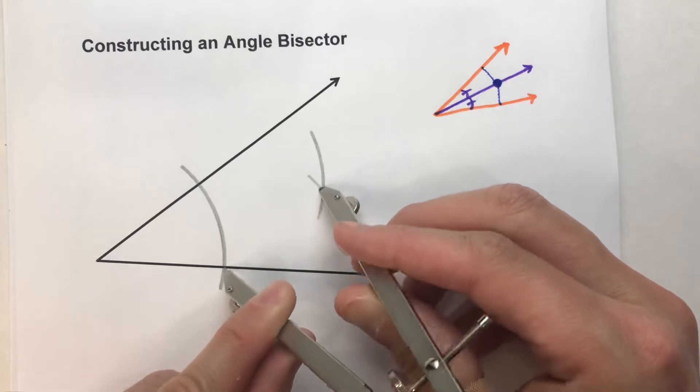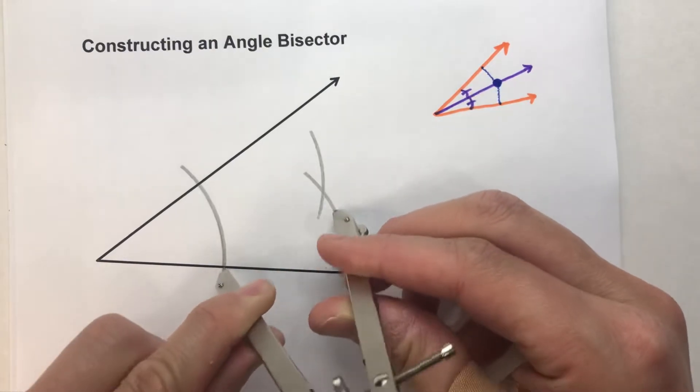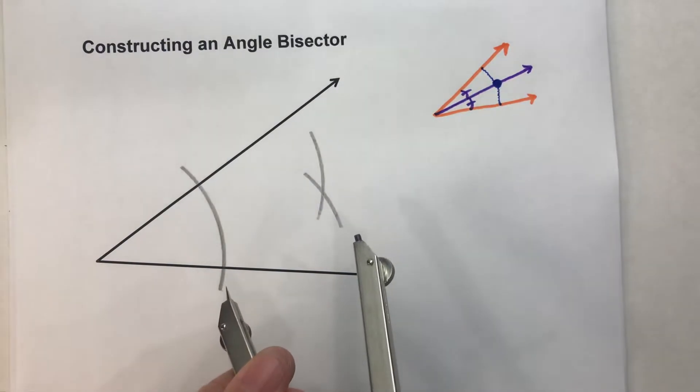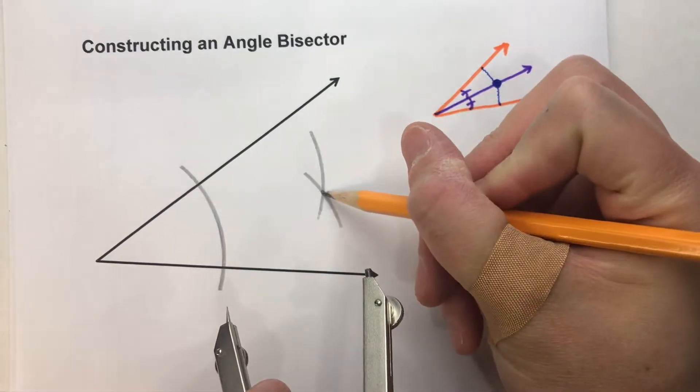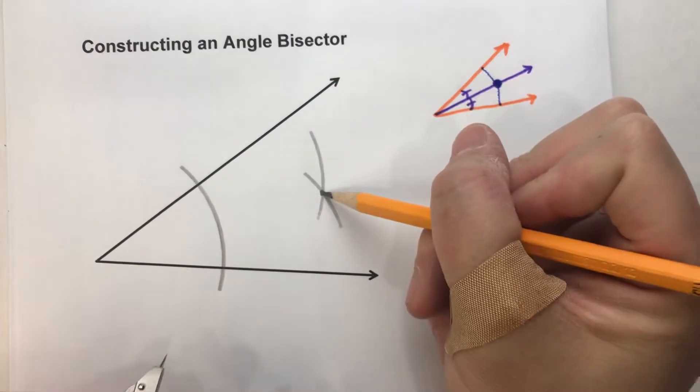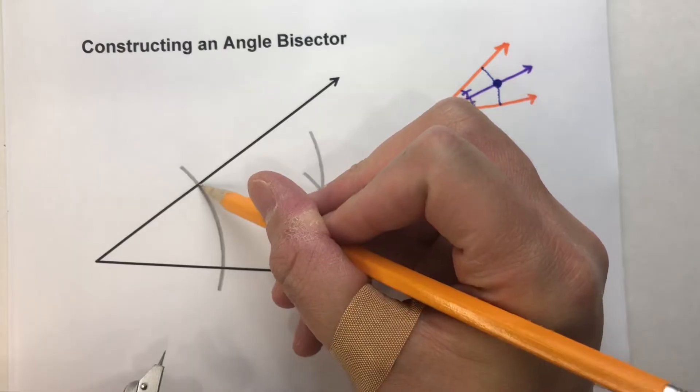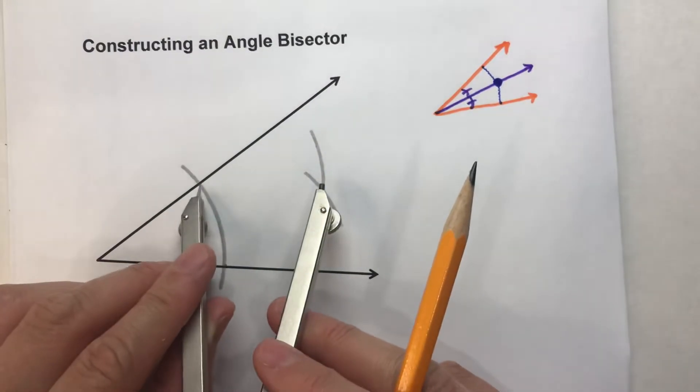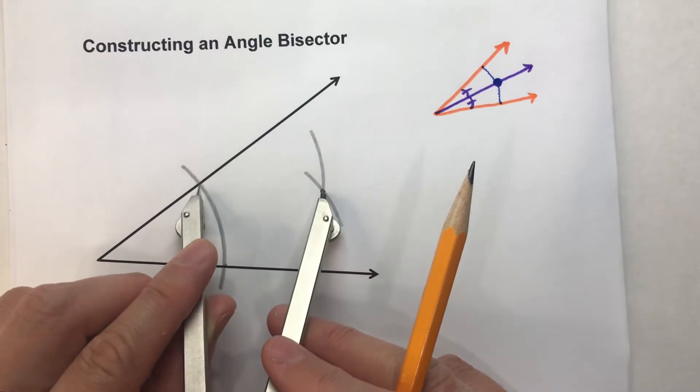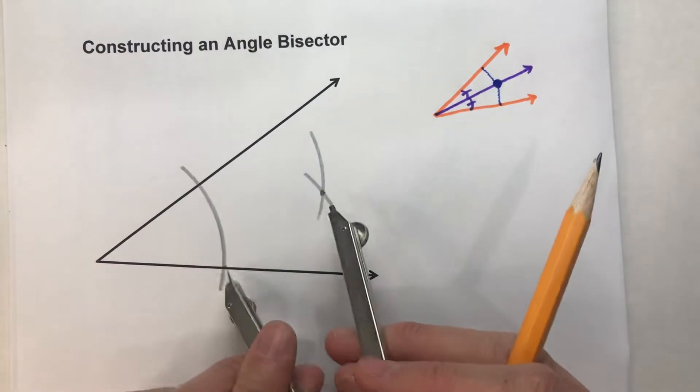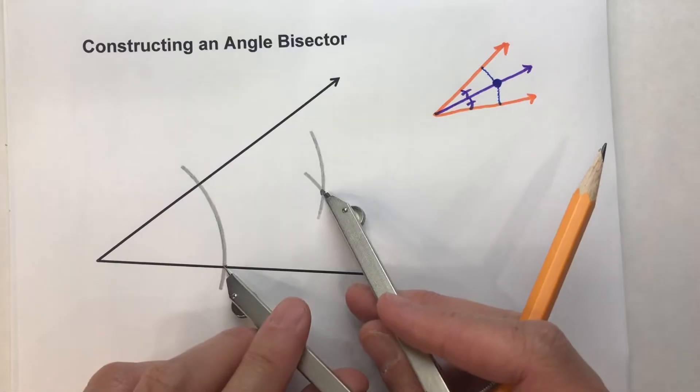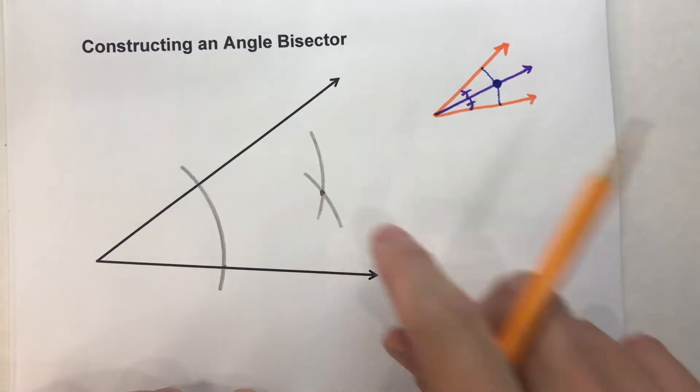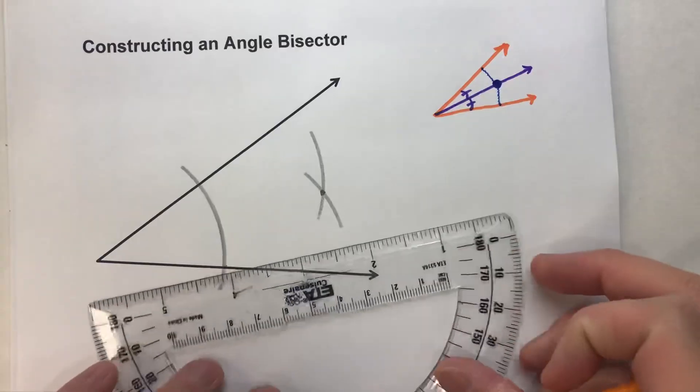And what we're doing is we are locating the one point, this point right here, that's the same distance from here as it is from here. And we know that because of our compass setting. This distance here is the same as this distance here. Therefore, this point has to be on the angle bisector.